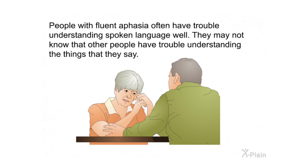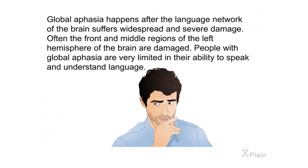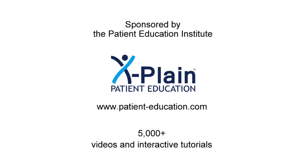People with fluent aphasia often have trouble understanding spoken language. They may not know that other people have trouble understanding the things that they say. Global aphasia happens after the language network of the brain suffers widespread and severe damage. Often the front and middle regions of the left hemisphere of the brain are damaged. People with global aphasia are very limited in their ability to speak and understand language.